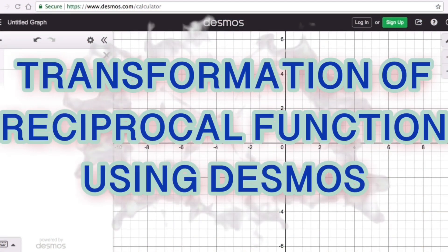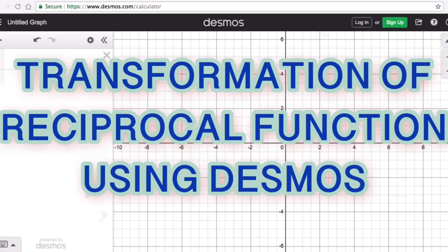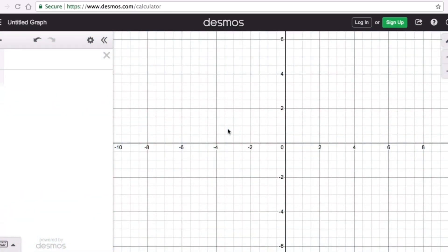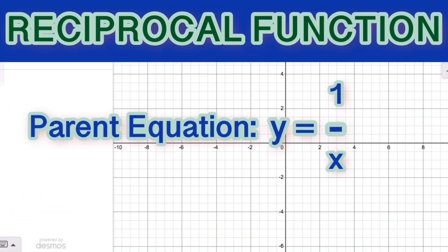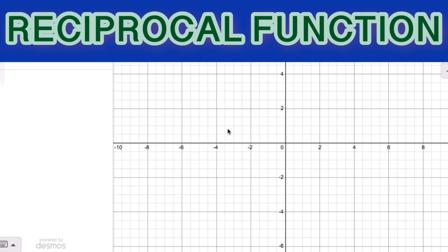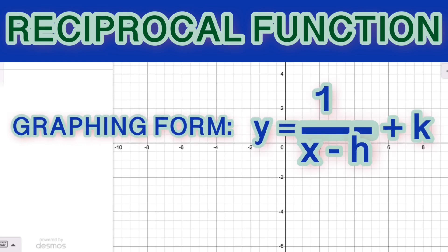Hello everyone. In this video we are going to focus on transformation of reciprocal function using Desmos. Please remember that the parent equation of a reciprocal function is y equals 1 over x, and the graphing form of this function is y equals 1 over x minus h plus k, where h and k are the parameters while x and y are the variables.